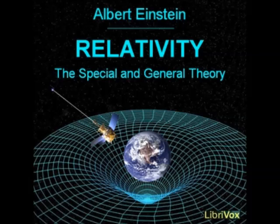Section 26: The Space-Time Continuum of the Special Theory of Relativity Considered as a Euclidean Continuum. We are now in a position to formulate more exactly the idea of Minkowski, which was only vaguely indicated in section 17. In accordance with the Special Theory of Relativity, certain coordinate systems are given preference for the description of the four-dimensional space-time continuum. We called these Galilean coordinate systems.